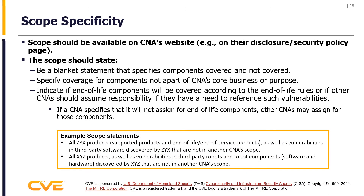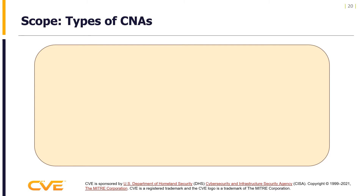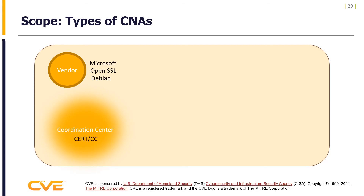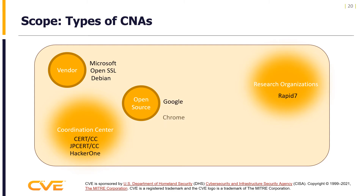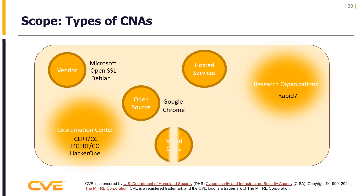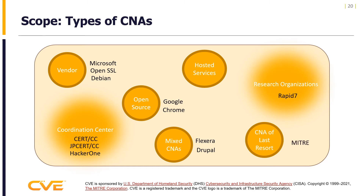There are different types of CNAs: vendor CNAs that cover products like Microsoft, OpenSSL, and Debian; CNA coordinators that cover vulnerabilities coordinated by organizations like CERT/CC, JPCert, and HackerOne; research organization CNAs covering vulnerabilities discovered by researchers like Rapid7; open source CNAs like Google and Chrome; and hosted services CNAs. There are also mixed CNAs — a combination of types — such as Flexera, who is a vendor and researcher, and Drupal, who is a vendor and coordinator. The CNA of last resort is MITRE.